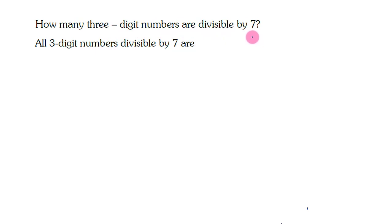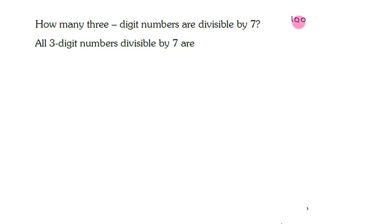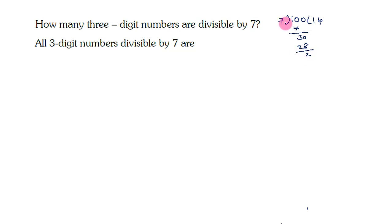Firstly, we need to understand what three-digit numbers are divisible by 7. Let us find the least three-digit number which is divisible by 7. We know that 100 is the least three-digit number. On dividing 100 by 7: 7 once is 7, remainder 3, bring down to get 30, 7 fours are 28, remainder 2. So dividing 100 by 7 gives remainder 2.